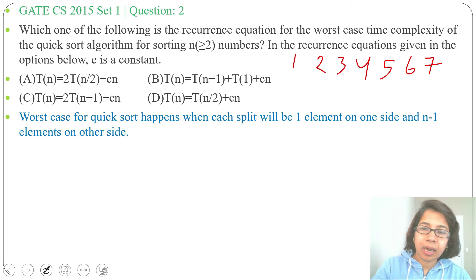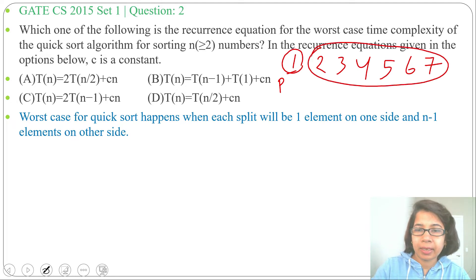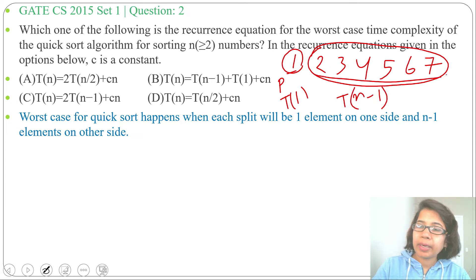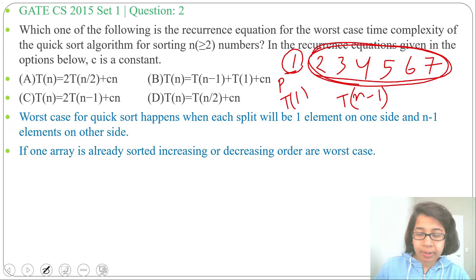Suppose one array contains 1, 2, 3, 4, 5, 6, 7. Now 1 will be our pivot, and after doing the partition we get 1 on one side and 2 through 7 on the other side. So this gives T(1) on one side and T(n-1) on the other side. If an array is already sorted in increasing or decreasing order, and we are considering the first element or last element as pivot, that is the worst case.